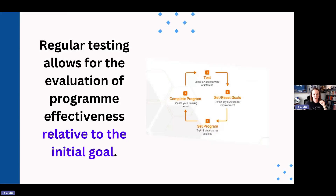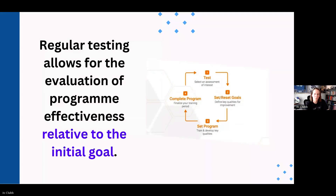I think it's important we touch on the monitoring piece because so often we do fall into this trap of testing all these tests in pre-season and then not repeating them again. Some tests, you can potentially justify that depending on what the results are and how you're using them. But we need to be really intentional here: if we're going to set a goal and an intervention based on our screening and our testing, how are we then monitoring the effectiveness of the program relative to the initial goal? Are we closing the loop here?